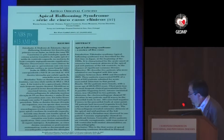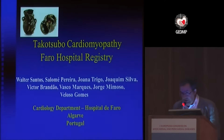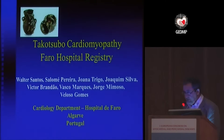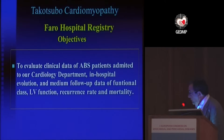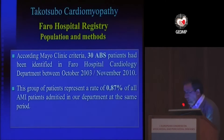Our interest in apical balloon syndrome began in 1997 with the publication of a paper with seven patients. In Acute Cardiac Care 2008, we reported 12 patients. Our registry now has 30 patients — we actually have 33, but three are awaiting follow-up results. To evaluate the data of ABS patients admitted to our cardiology department in Faro, 30 patients were identified over this period, representing a rate under 1% of patients with acute myocardial infarction.